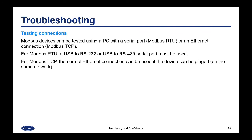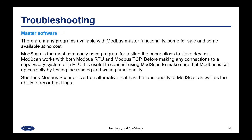When testing a connection, you want to test the Modbus device using a PC with a serial port for Modbus RTU or an ethernet connection for Modbus TCP. For Modbus RTU, a USB to RS-232 or USB to RS-485 serial port adapter must be used depending on whether your Modbus RTU uses RS-232 or RS-485. For Modbus TCP, the normal ethernet connection on your computer can be used if the device can be pinged on the same network. There are many programs available with Modbus master functionality — some for sale and some at no cost. ModScan is the most commonly used program for testing connections to slave devices and works with both Modbus RTU and Modbus TCP.